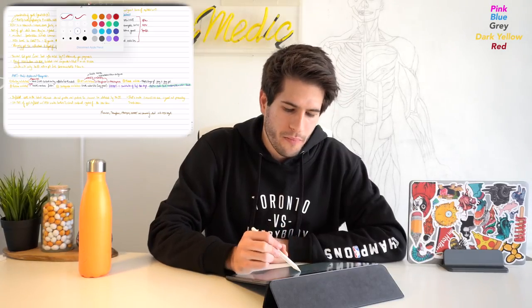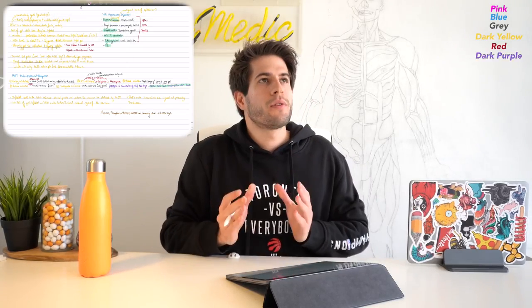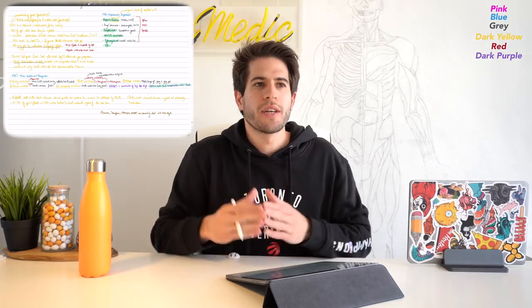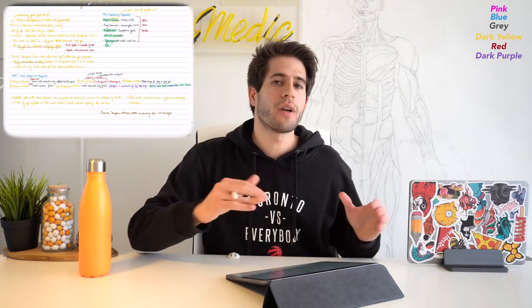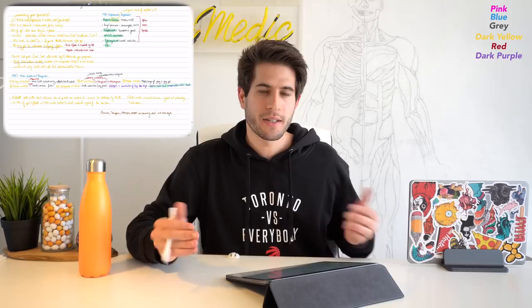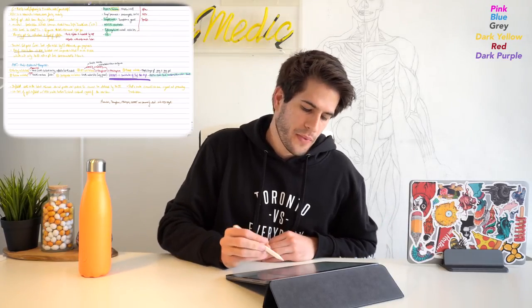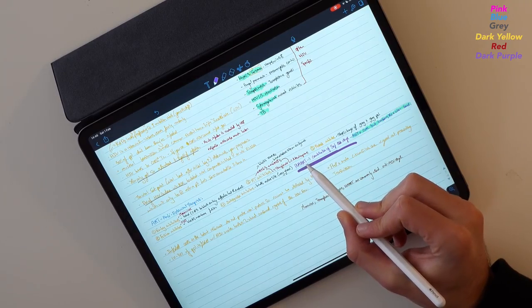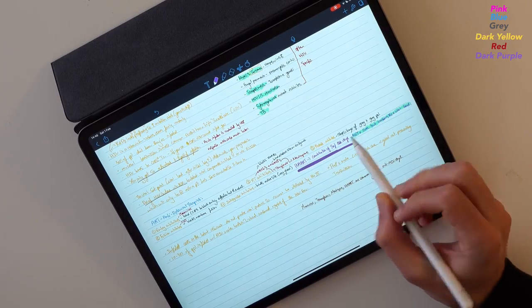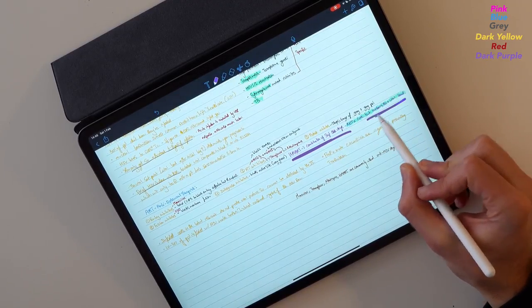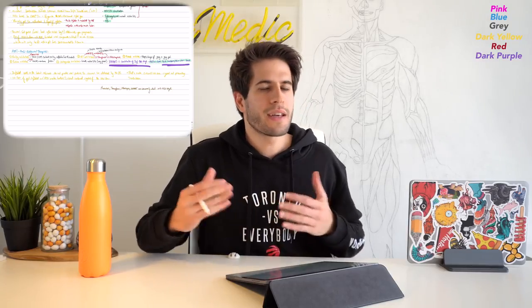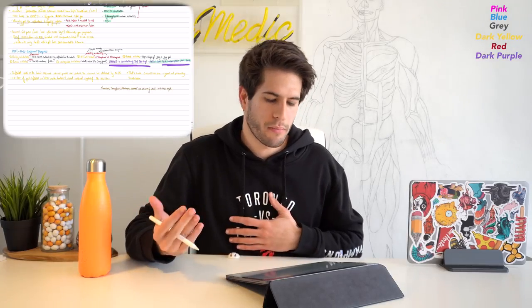The next two colors are dark purple and light purple. Dark purple is reserved for pieces of information that I think are high yield and likely to show up on upcoming tests. For example, this information here: highly active antiretroviral therapy is a combination of three of these drugs. They're not a cure, but they control replication and viral load. This piece of information I think is going to be very important, so I'm going to write it in dark purple.